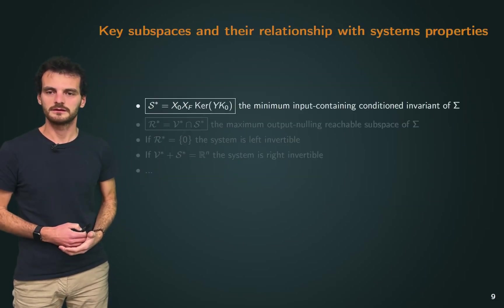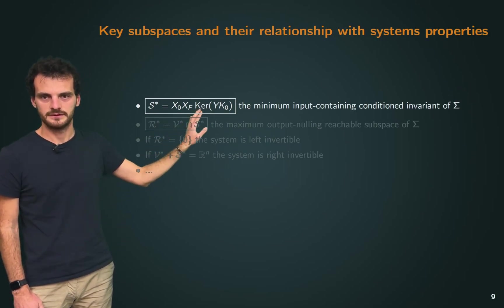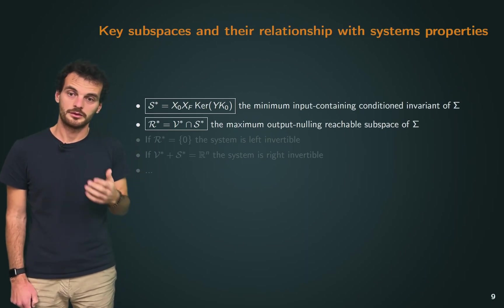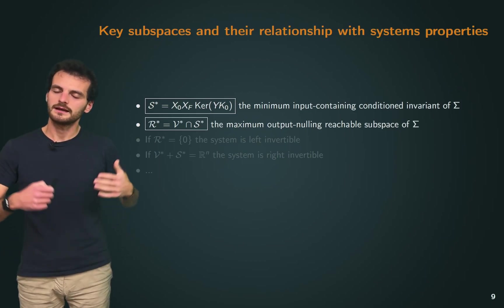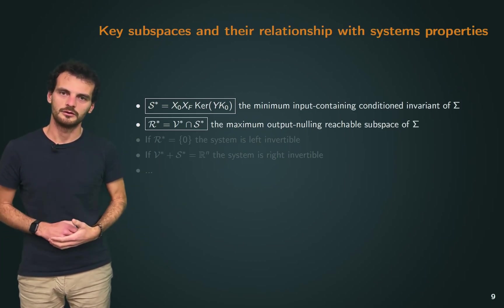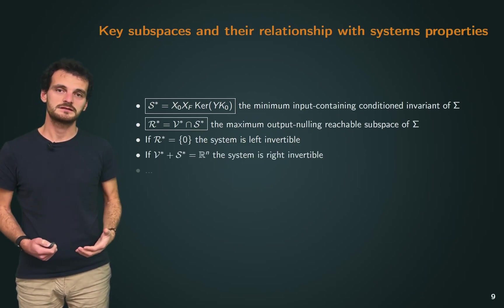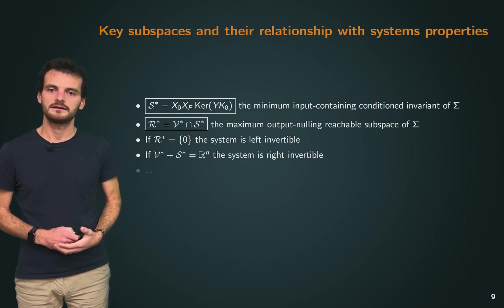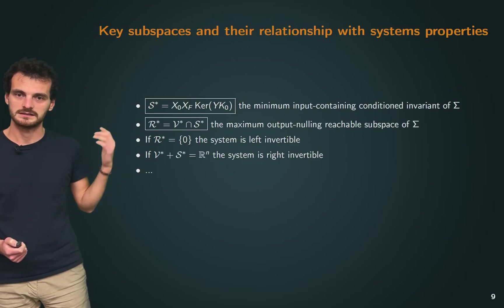We find a similar data-driven representation for S* and R*, which are two of the three key invariant subspaces typical of the geometric approach. Why are they so important? Well, you can learn a lot from the system by simply knowing these three subspaces. For example, we know that if R* contains only the origin, then the system is left invertible. If V* plus S* equal the whole state space, then the system is right invertible. And these are only a few of many properties that we can infer from the knowledge of V, S, and R*.